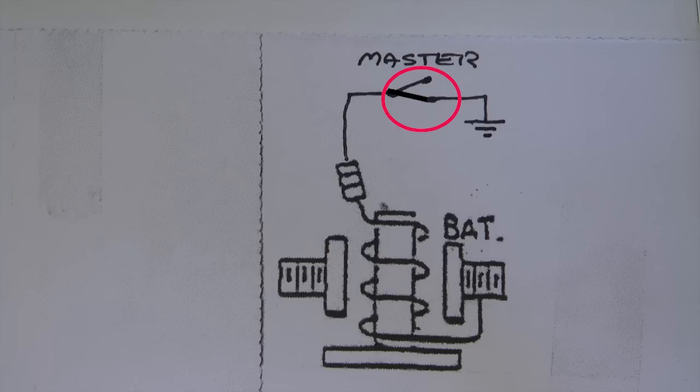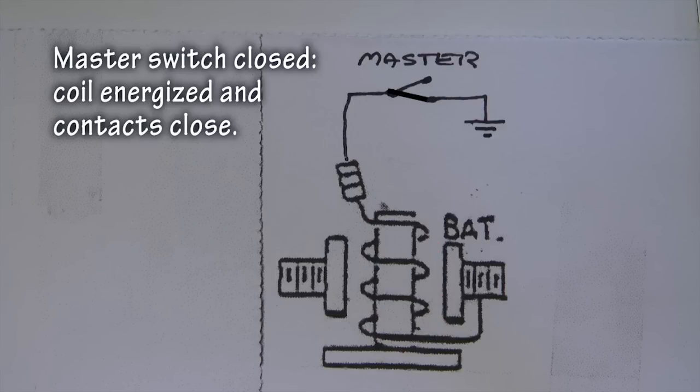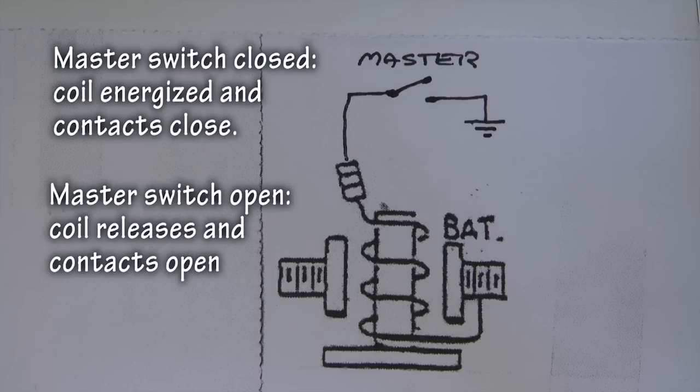We are supplying power to an internal coil. This coil is an electromagnet that pulls our large contacts closed and keeps them closed as long as we keep the coil energized. When we turn off the master switch, that magnetic coil stops pulling and an internal spring returns the contacts to the open position.